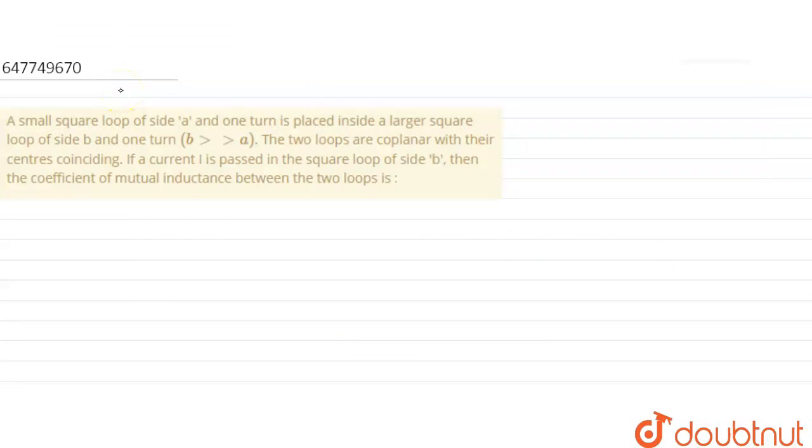So, there is a question from our past. The question is: a small square loop of side A, and one turn, is placed inside a large square of side length B, one turn again, and B is very very greater than A. The two loops are coplanar with their centers coinciding. If current I is passed in square loop of side B, then the coefficient of mutual inductance between the two loops.